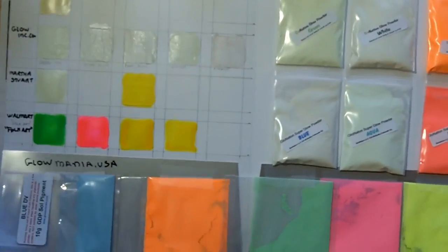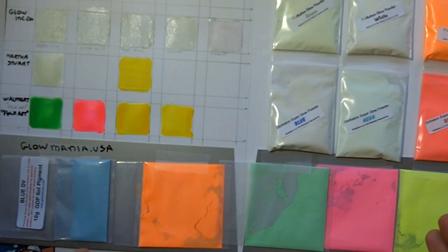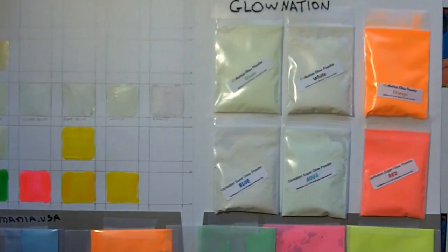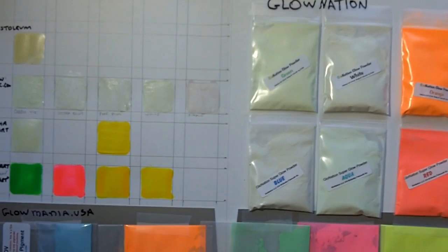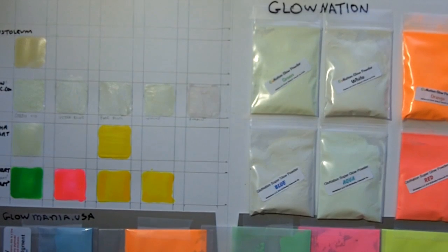These down here are from Glow Mania USA. These are pigmented so they look in the day what they're going to look like when they glow. What we're going to do now is set up the camera in the bathroom, which is the only room in my house which does not have a window. I'm going to bring this in real quickly from charging up in the sunlight so we can get a comparison of how all these things glow.